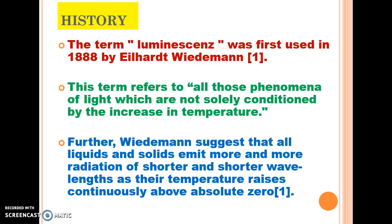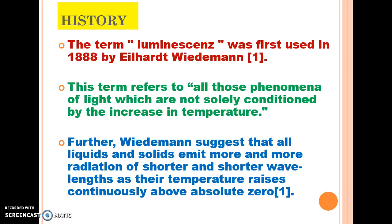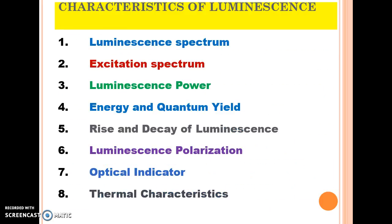Now the characteristics of luminescence. Luminescence has the following characteristics: luminescence spectrum, which is an important characteristic; excitation spectrum, which is another important characteristic of this phenomenon; luminescence power; energy and quantum yield; rise and decay of luminescence; luminescence polarization; optical indicator; and thermal characteristics.